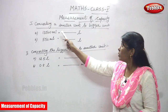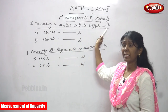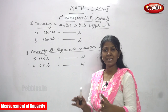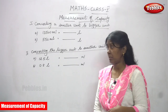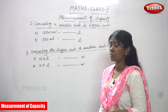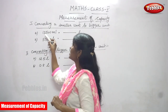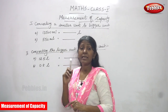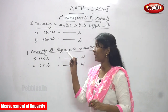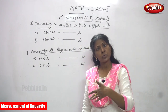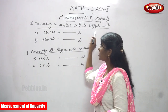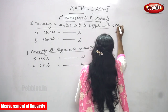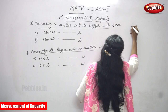We are going to convert a smaller unit to a bigger unit. We'll do some problems now — if you do the problems you can understand the concept very clearly. The first question is converting a smaller unit to a bigger unit. Smaller to bigger means you have to divide. That is the division — division by one thousand.